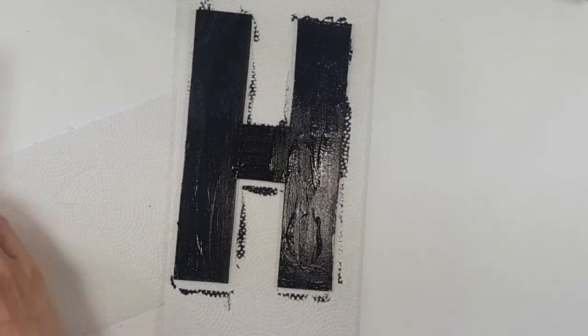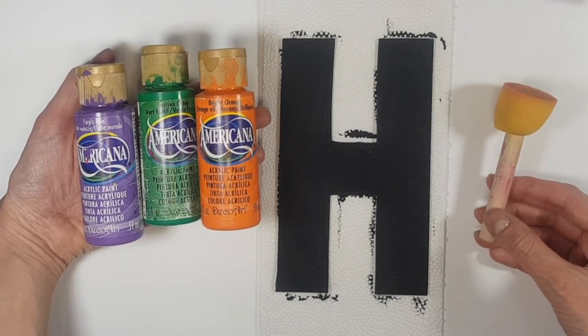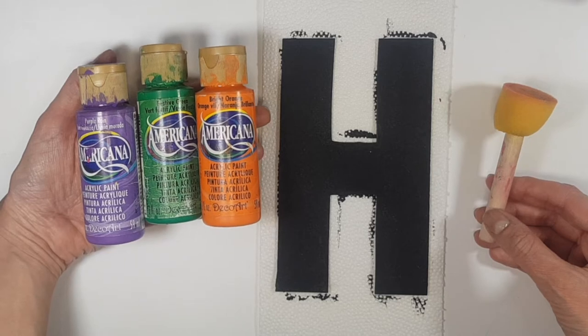And I gave one coat to the back of them, just to make them a bit heavier. But I'm going to be decorating them, using my purple, green, and orange acrylic paints, and this sponge thing that I have.